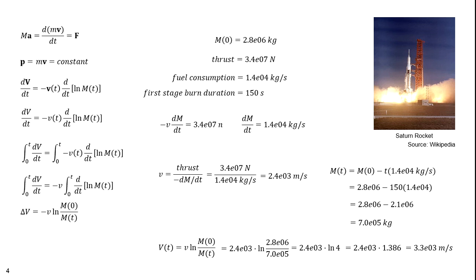Additional stages were necessary to get the velocity up to Earth escape velocity: 11×10³ meters per second.